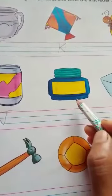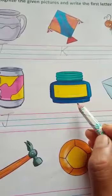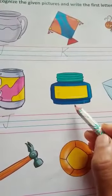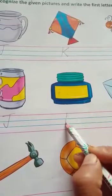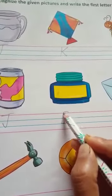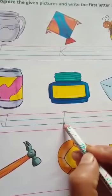And next is ink pot. Ink pot means dabat. Ink pot ka first letter kya hoga? I. I for ink pot.